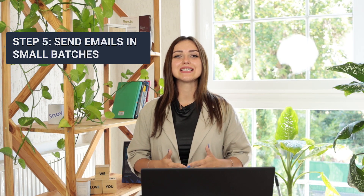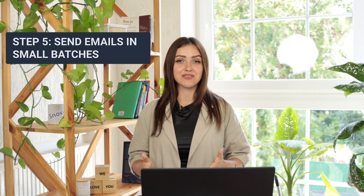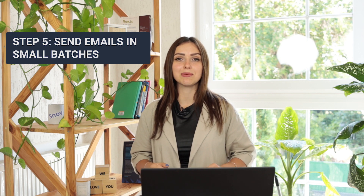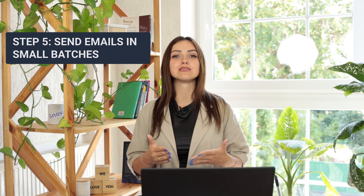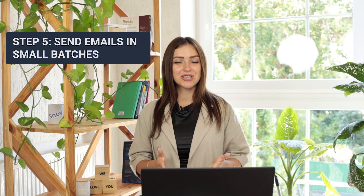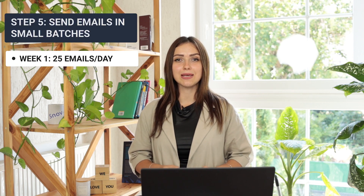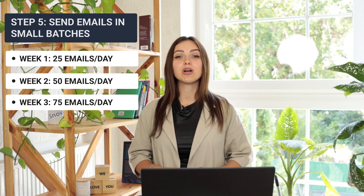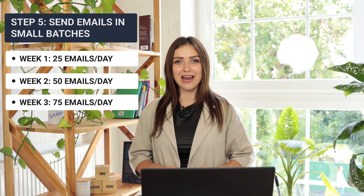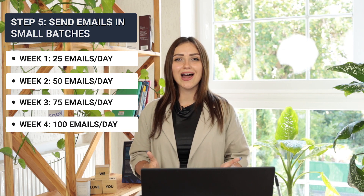Step number five: Send out engaging emails in small batches. Now when you're ready to start your outreach campaign, you can start increasing the number of emails you send. Take your contacts and divide them into lists — these lists will form batches for your campaign, each batch larger than the one before. Your sending schedule should look like this: Week 1 — 25 emails per day; Week 2 — 50 emails per day; Week 3 — 75 emails per day; Week 4 — 100 emails per day.